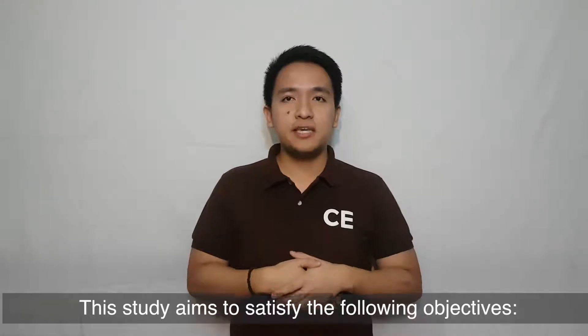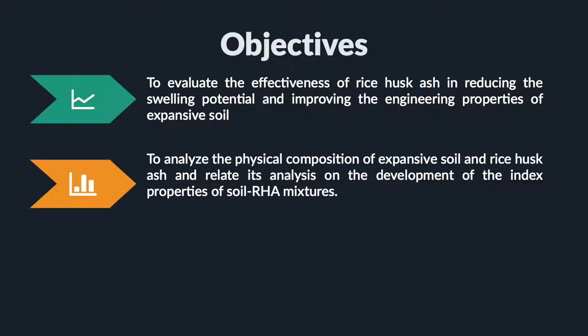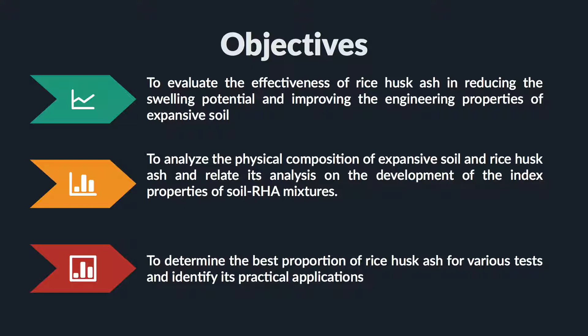This study aims to satisfy the following objectives: to evaluate the effectiveness of rice husk ash in reducing the swelling potential and improving the engineering properties of expansive soil; to analyze the physical composition of expansive soil and rice husk ash and relate this analysis to the development of the index properties of soil-RHA mixtures; and lastly, to determine the best proportion of rice husk ash for various tests and identify its practical applications.